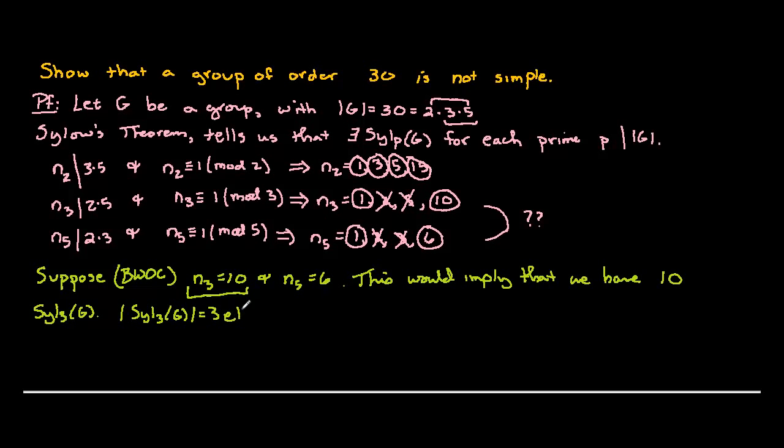In a Sylow 3 subgroup of order 3, we've got 3 elements, 2 of which are non-identity elements, and 1 of which is the identity. We've got 10 of these, and these Sylow 3 subgroups are cyclic groups of order 3. They're all intersecting at just one element, namely the identity. But all the other elements are different. We know this because groups of prime order only intersect at the identity or else they're identical.